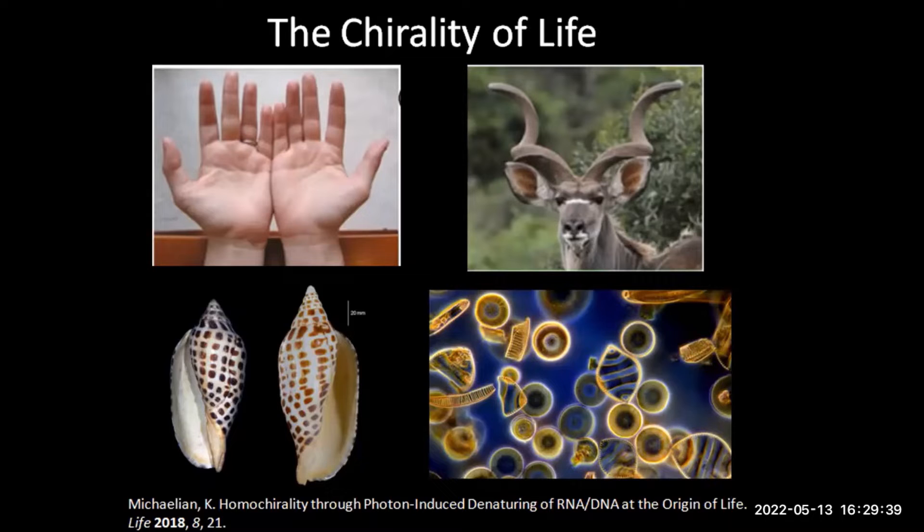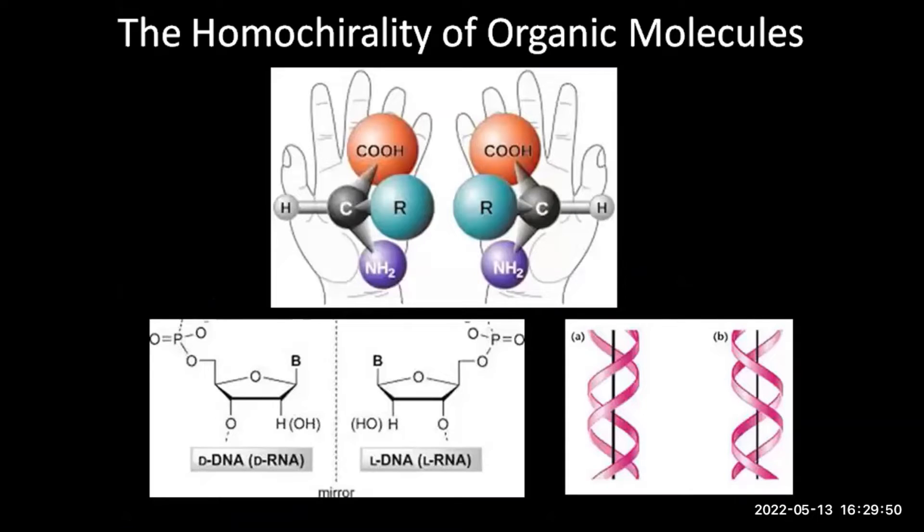So these two chiralities exist in nature. And these are some examples. There are many more examples of chirality in nature. Now, chirality exists even all the way down to molecules, to these organic molecules.